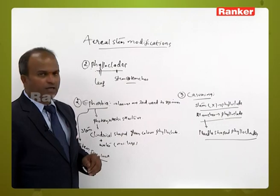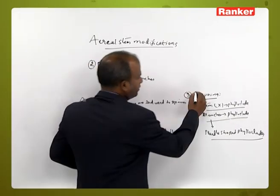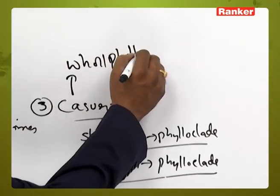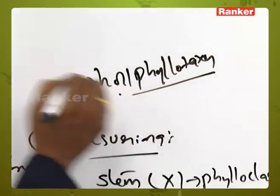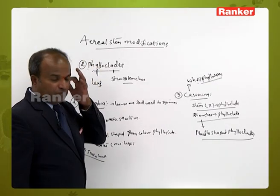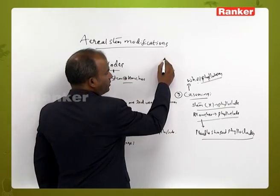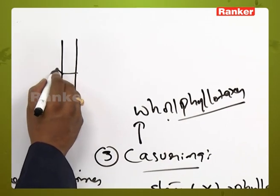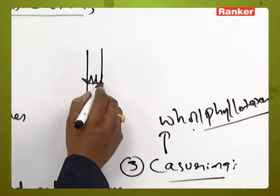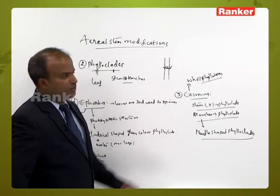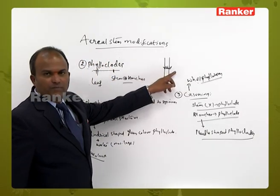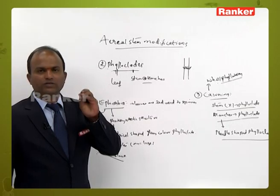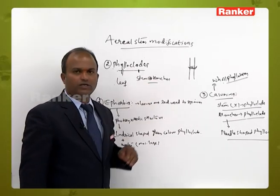In Casuarina, whorled phyllotaxy can be seen. At the node area, leaves are reduced to scaly leaf-like structures arranged in the form of a whorl, which represents whorled phyllotaxy. This concludes the topic of phylloclades.